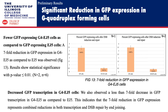We found a significant reduction in GFP expression in G-quadruplex-forming cells. A seven-fold reduction in GFP expression in G4-EJ5 cells as compared to EJ5 cells was observed, as shown in figure 13, with statistical significance at p-value less than 0.01. We also found decreased GFP transcription in G4-EJ5 cells, with preliminary data showing a less than seven-fold decrease in GFP transcription in G4-EJ5 as compared to EJ5. This indicates that the seven-fold reduction in GFP expression represents combined reductions in both transcription and double strand break repair by end joining.